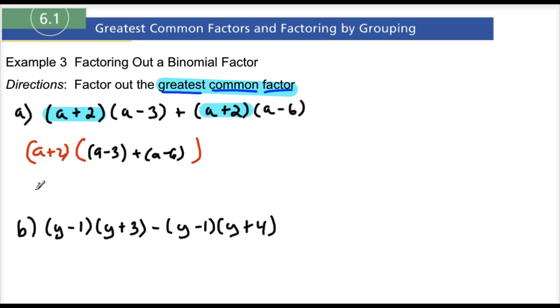Now we can simplify what's inside of these parentheses here. And that's what I want to do. So I have A plus 2. And A plus A is 2A. And negative 3 minus 6 is a negative 9. So that would be our final answer right there.